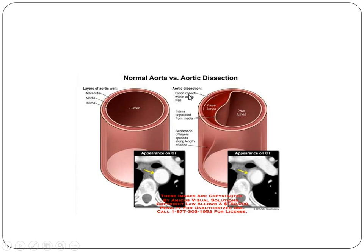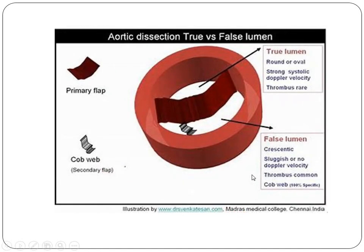In aortic dissection, blood collects within the aortic wall and there is separation of the intima from the medial layer, extending the whole length of the aorta. On CT, comparing normal to dissection: the true lumen is surrounded by a strong systolic Doppler signal and thrombosis is rare. The false lumen has a crescentic shape with sludge or absent Doppler velocity. Thrombosis is common in the false lumen. This is the comb sign.